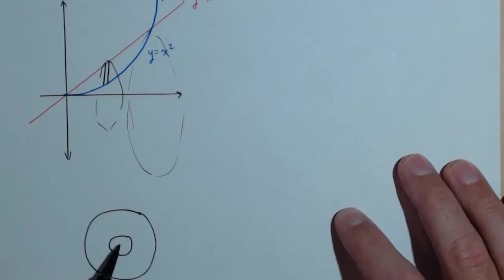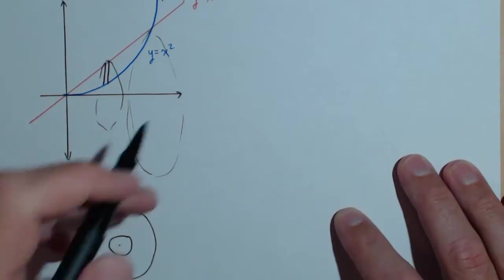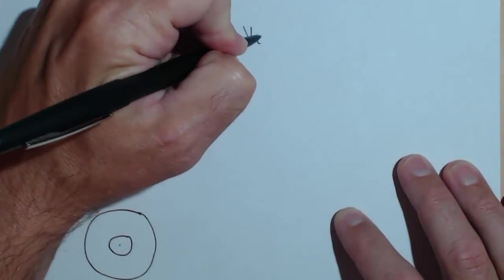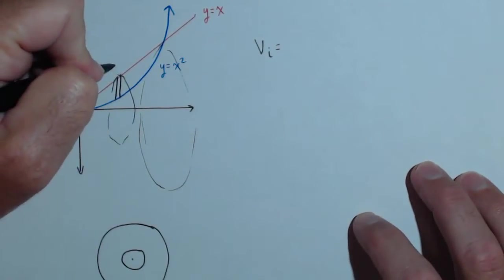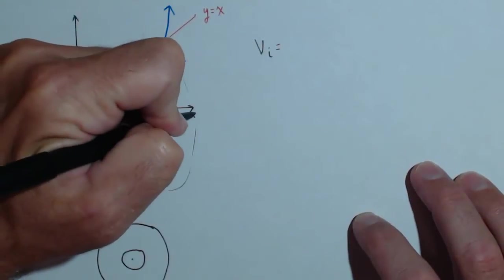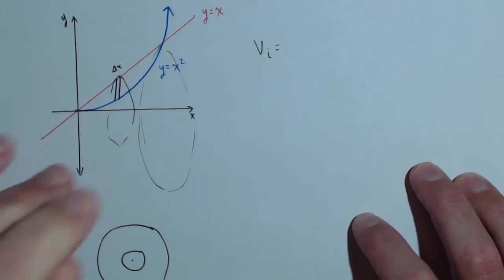Since we're trying to do a volume, we're going to need the volume of the i-th slice. Well, let's give this a thickness of delta x since this is going to be our x-axis and this is our y-axis.